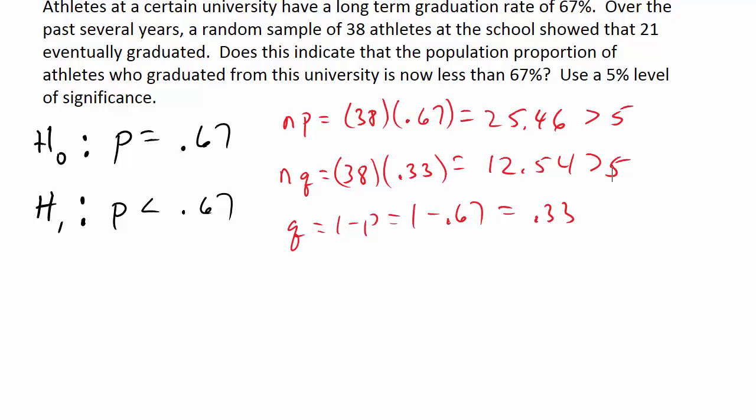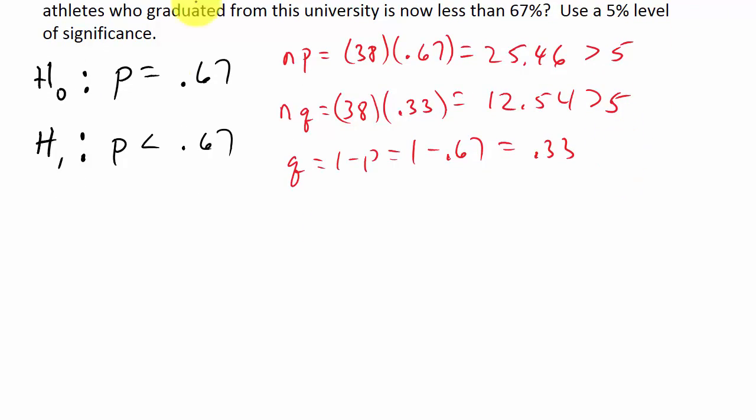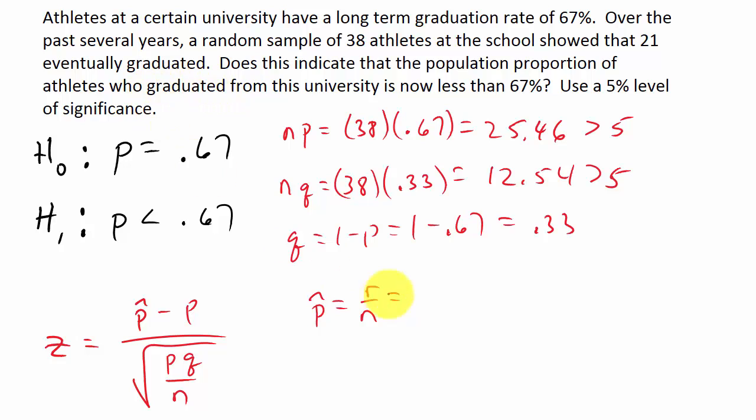Now we need to find P hat. Well, first let's write our formula. Our formula would be Z—this is our test statistic—would be P hat minus P over the square root of P times Q over N. P hat, remember, that's R over N. In this case, the R—well, that's the number of successes. Well, 21 eventually graduated, so 21 is the number of successes over the number of total athletes that were selected, so that's over 38.